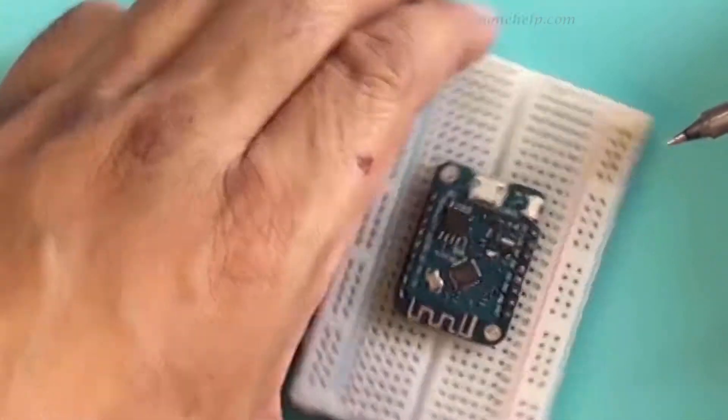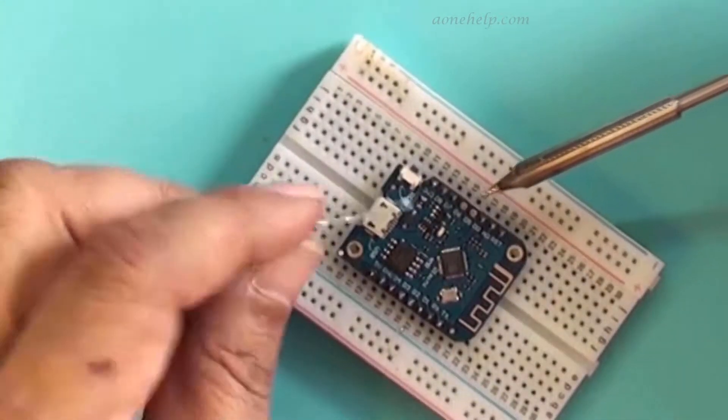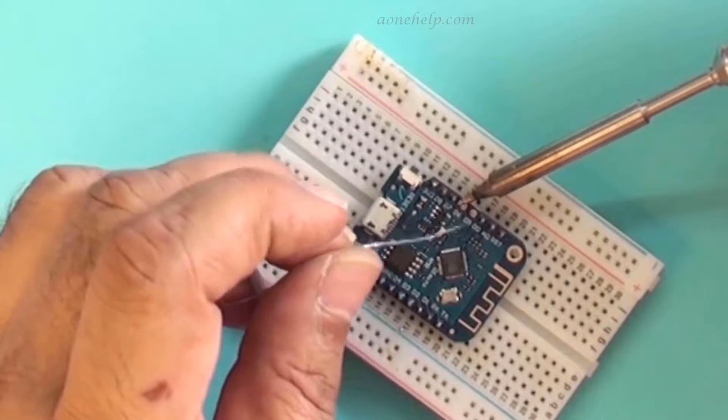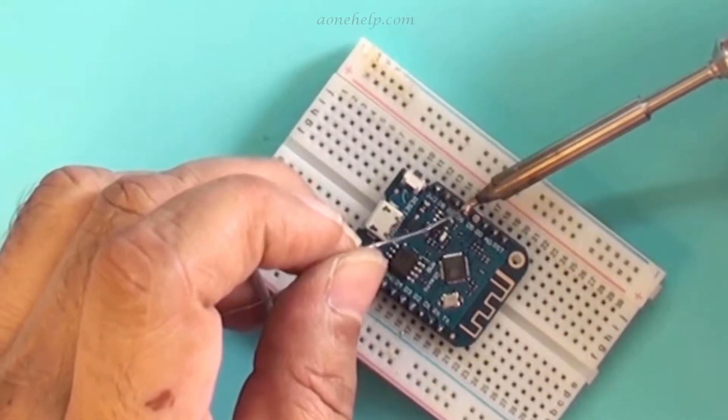We have purchased this soldering iron from Banggood. This is also available on Amazon and eBay, but its price is lowest on Banggood.